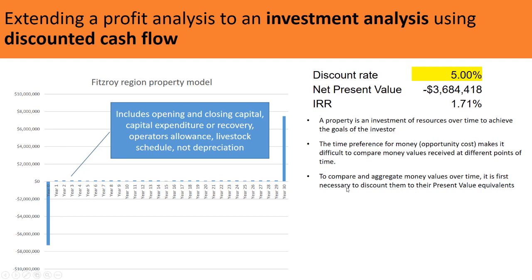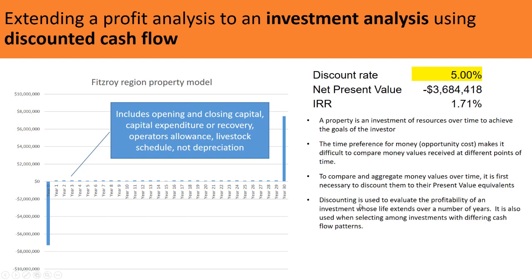To compare and aggregate money values over time, it is first necessary to discount them to their present value equivalents. You could compound everything forward to a future value, but instead we discount all different amounts back to the common starting point. Discounting is used to evaluate the profitability of investments whose life extends over a number of years, and also when selecting among investments with different cash flow patterns.